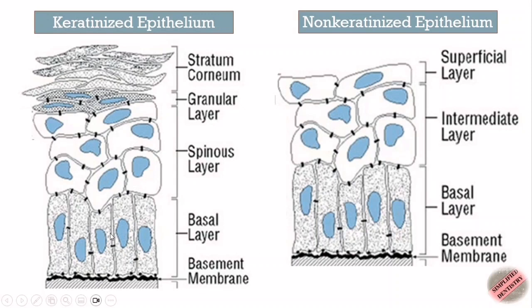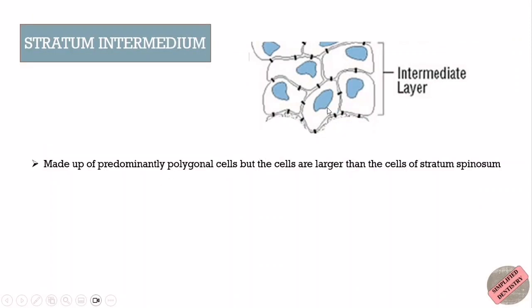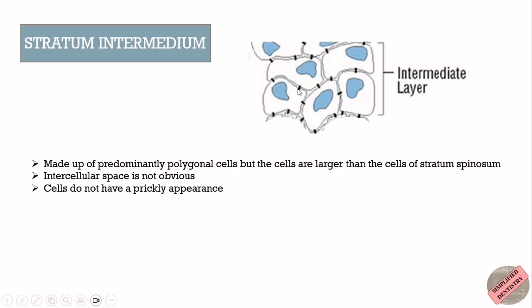The cells of stratum intermedium are larger than the cells of stratum spinosum. The intercellular space is also not obvious or enlarged, and hence the cells of the stratum intermedium do not have a prickly appearance.